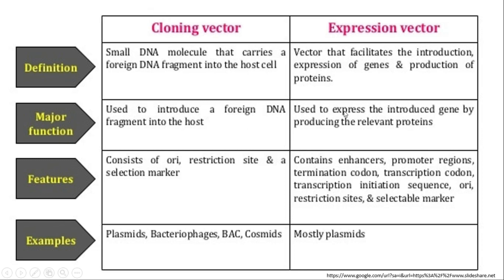The major function of a cloning vector is to introduce a foreign DNA fragment into the host, whereas an expression vector is used to express the introduced gene by producing the relevant proteins. Cloning vectors consist of an ORI site, restriction site, and selection marker, whereas expression vectors contain enhancer, promoter regions, termination codon, transcription initiation sequence, ORI, restriction sites, and selectable markers.